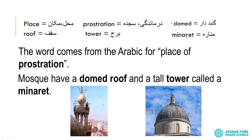Mosques have a domed roof and a tall tower called a minaret. مسجد دارد یک سقف گنبدار و یک برج دراز که گفته می شود مناره.